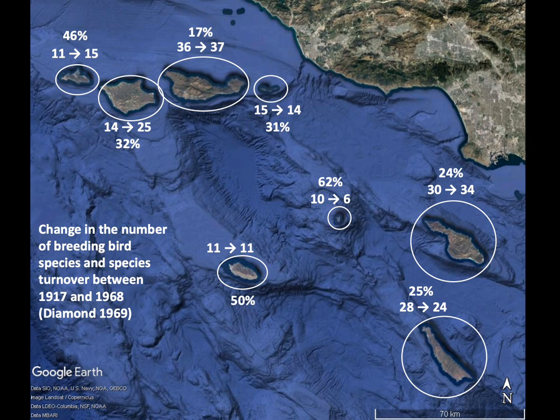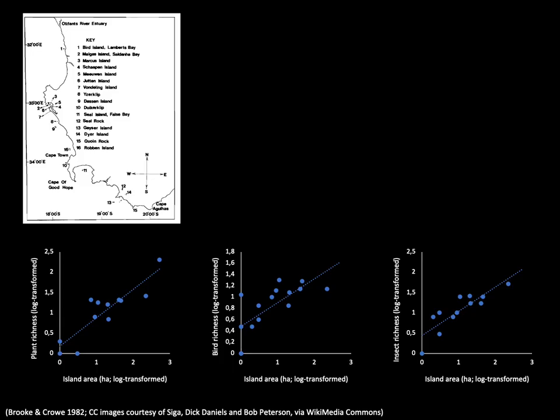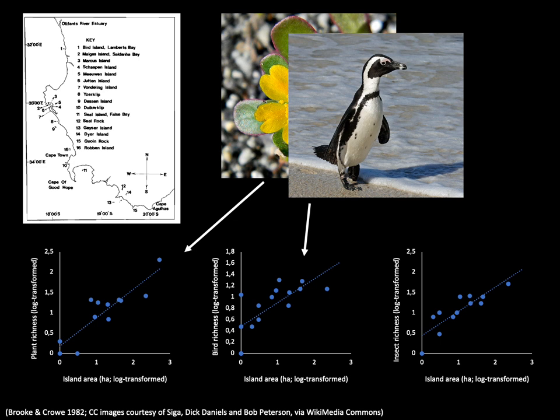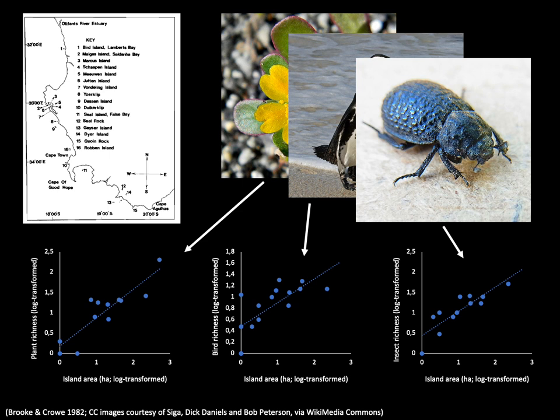But what about the influence of island size and isolation? Here we also have good evidence from multiple studies supporting the theory. Looking at South Africa's offshore islands in the southwestern Cape, we can see the same pattern of species richness increasing with size for six different groups of species. In each of three graphs, the x-axis shows island area and the y-axis shows species richness. There is a positive relationship between island size and the richness of vascular plants, the same positive relationship with birds, and the same positive relationship between island size and the richness of insect species.